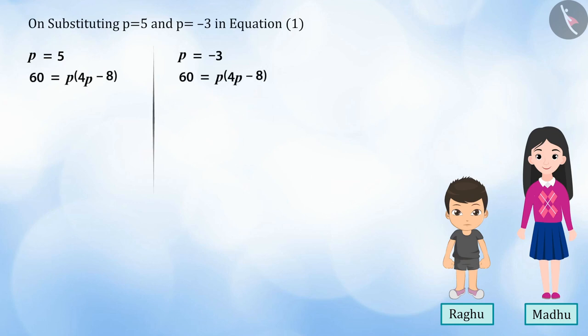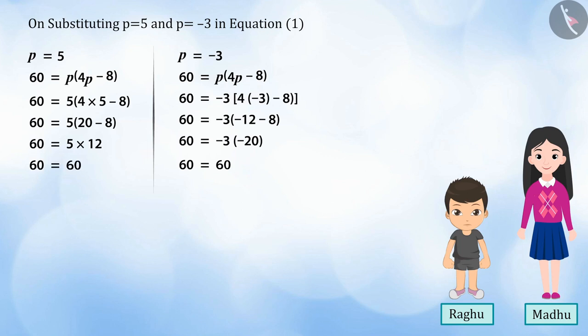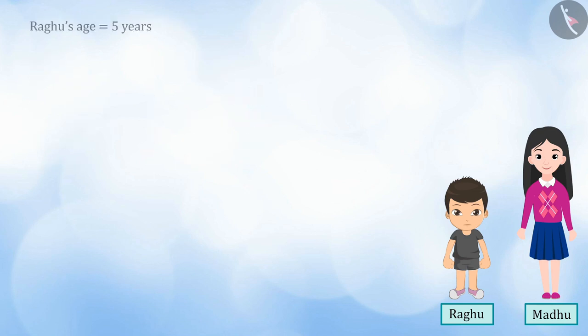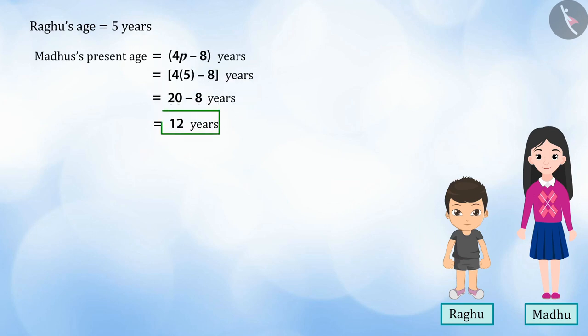Therefore, both the solutions of p, that is 5 and minus 3, satisfy our equation. But if we wish to find out the age of Raghu and Madhu, an age cannot be a negative integer. Therefore, we will take the value of p as 5. Thus, Raghu's age will be 5, and Madhu's age will be 12 years.